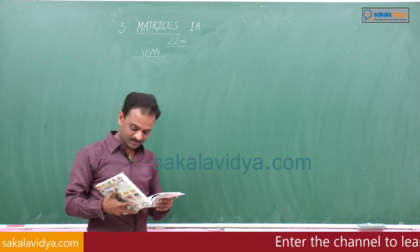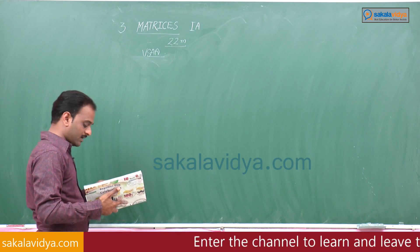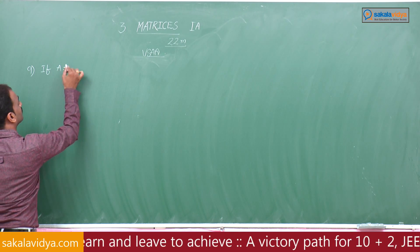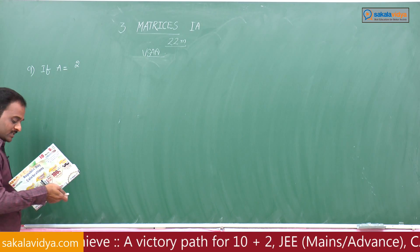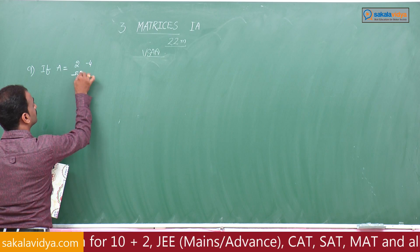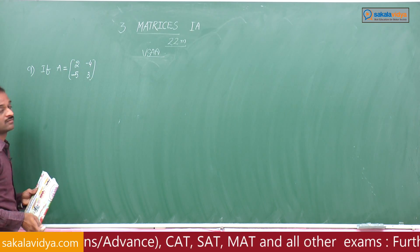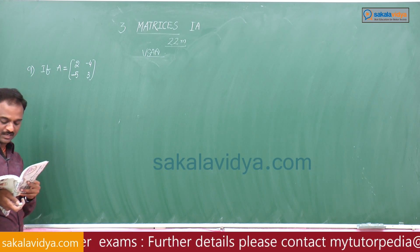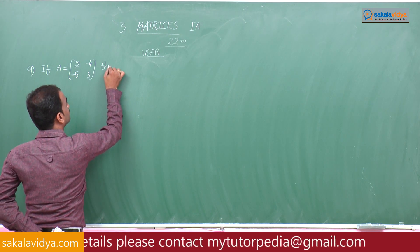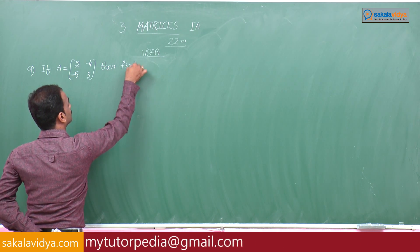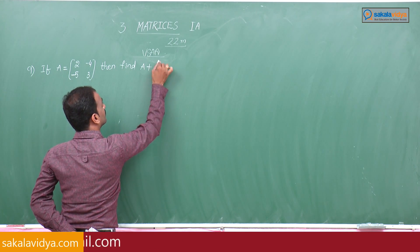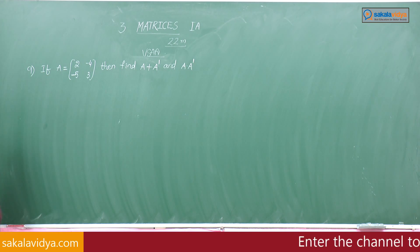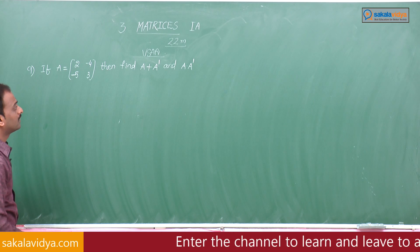Problem number 9: If matrix A equals [[2, -4], [-5, 3]], find A plus A transpose, and A into A transpose.